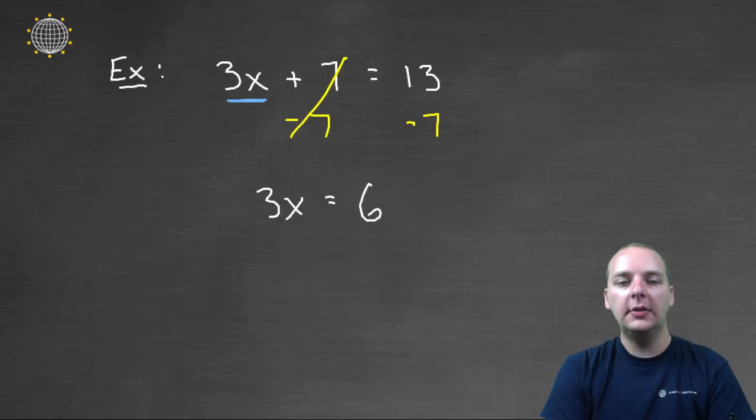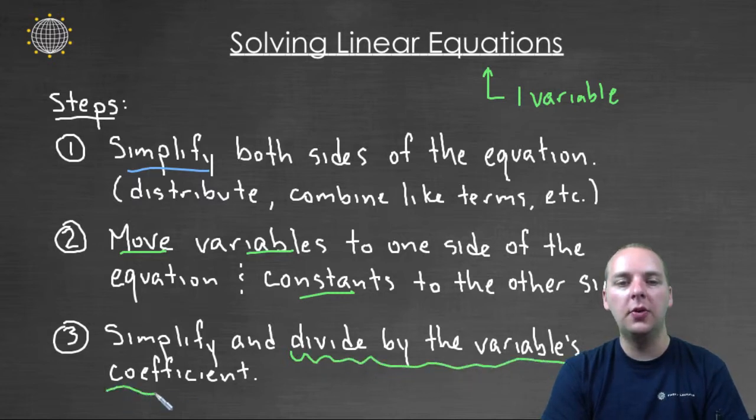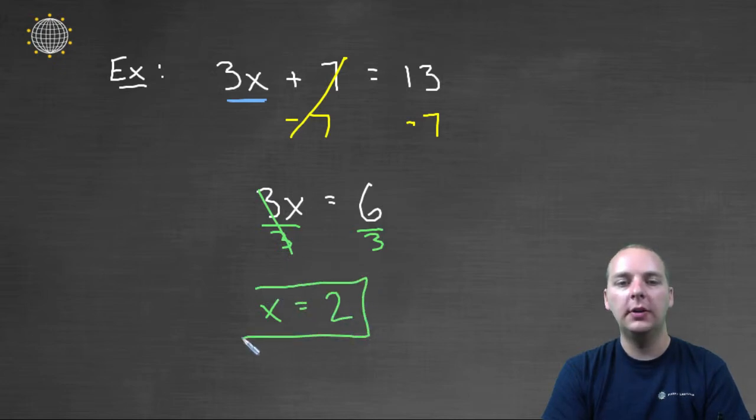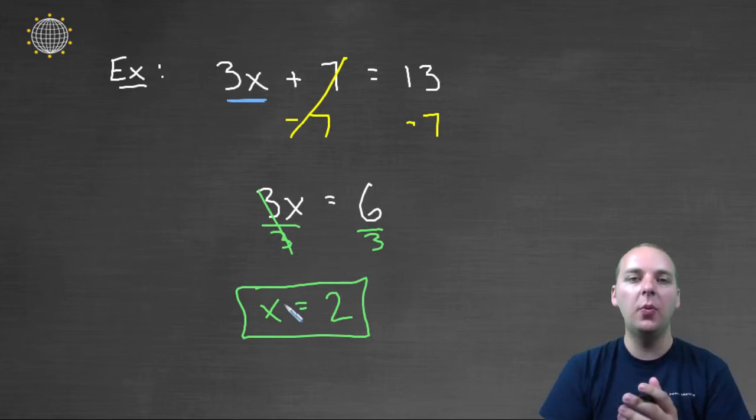Then to solve for x, we will divide by the variable's coefficient. If you remember, that was the last step. After you've moved the variables and the constants, we're going to divide by the variable's coefficient. Our coefficient was 3, we'll divide the left side by 3, and the right side by 3, and we'll get x = 2. So 2 is your solution. We did it, we did this in a systematic way.